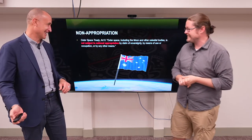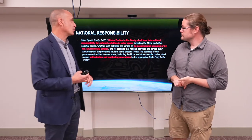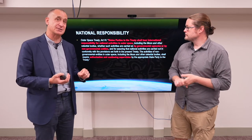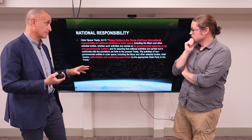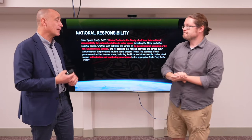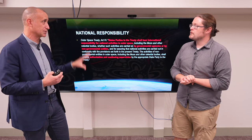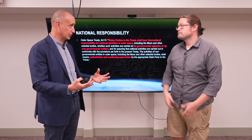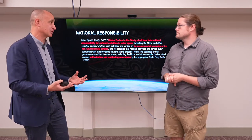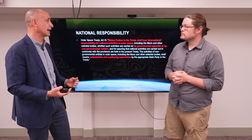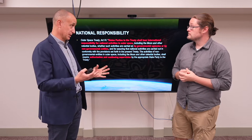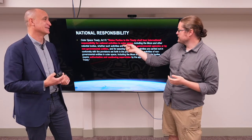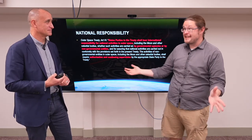Under Article 6, all governments bear international responsibility for national activities in outer space, and this extends not just to governmental activities but even to non-governmental activities — companies in that country. This is quite different from normal international law, which would only hold a government responsible if it were somehow involved in a non-governmental activity, such as if the company was acting as its agent. Article 6 is different: it says no matter what, even if you specifically prohibited a company from doing something, you're still responsible.